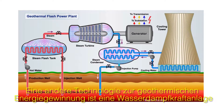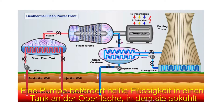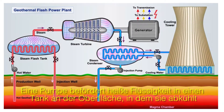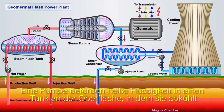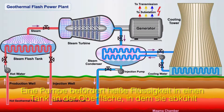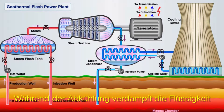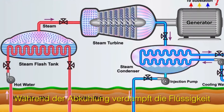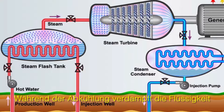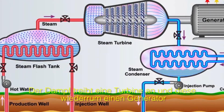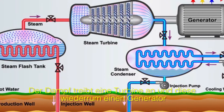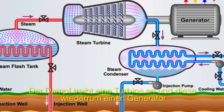Another geothermal technology is called a flash steam power plant. A pump pushes hot fluid into a tank at the surface, where it cools. As it cools, the fluid quickly turns into steam. The steam then drives a turbine and powers a generator.